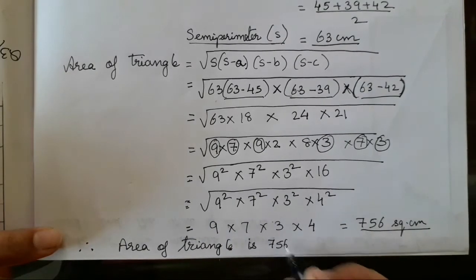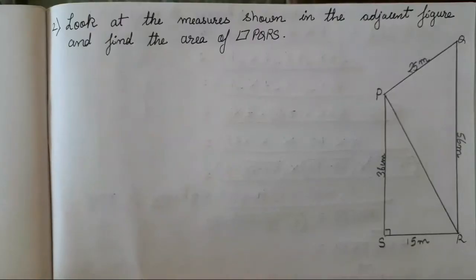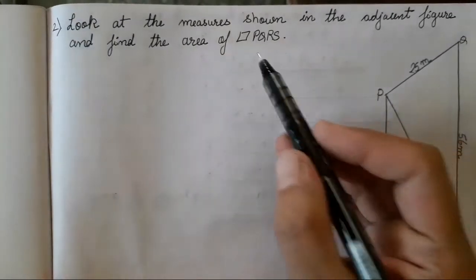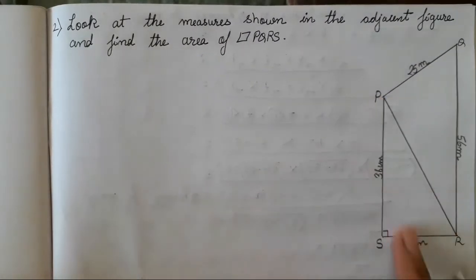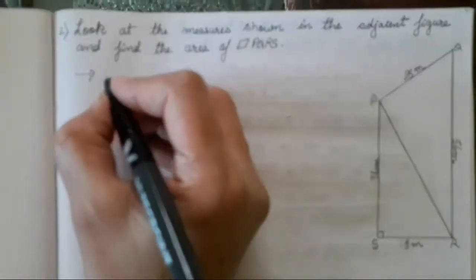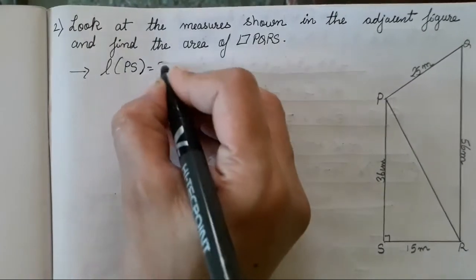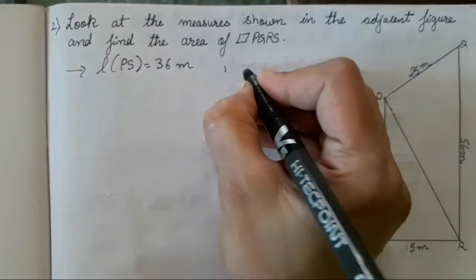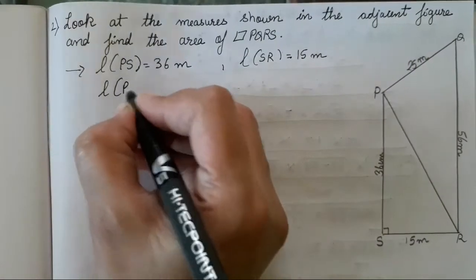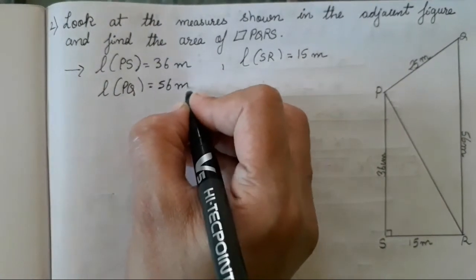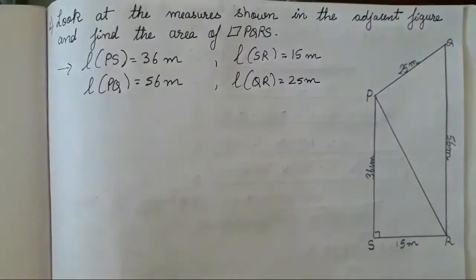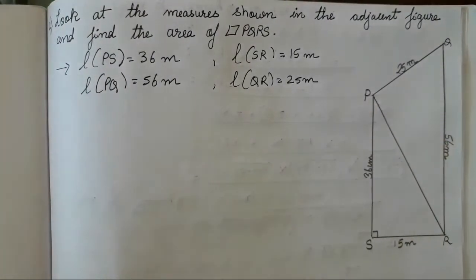Area of triangle = 756 sq cm. Now for the next problem: look at the measures shown in the adjacent figure and find the area of quadrilateral PQRS. We have two triangles here. The diagram is already given in the textbook. The measures given are: PS = 36 m, SR = 15 m, PQ = 25 m, QR = 56 m.